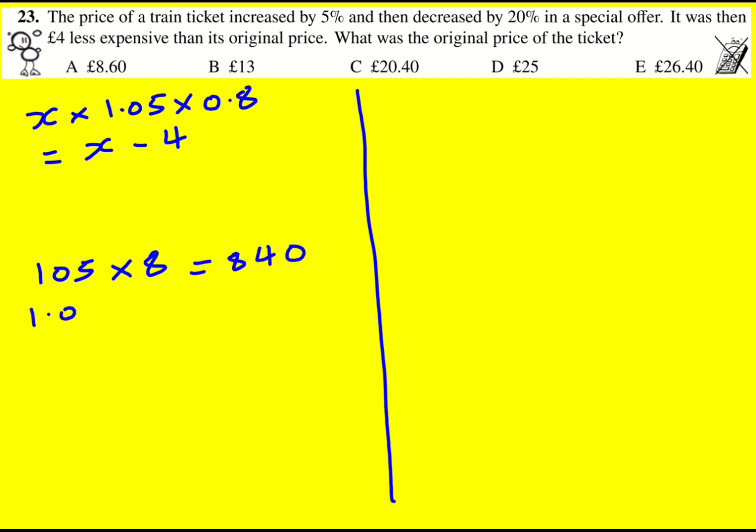And therefore, 1.05 times 0.8 is going to be, just by estimating, I can, comparing, I can see it's going to be around 1. It's going to be 0.84.